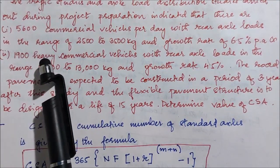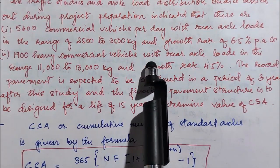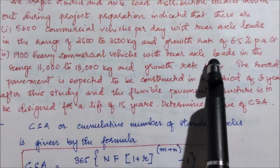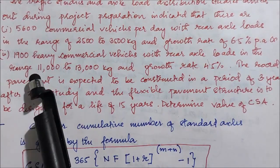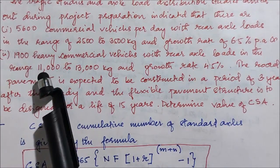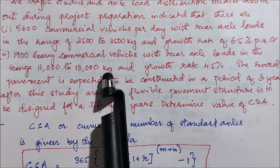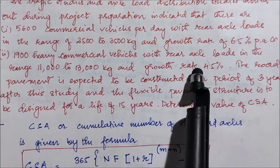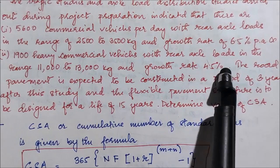For the second class, there are 1900 heavy commercial vehicles with rear axle loads in the range of 11,000 to 13,000 kg, and the growth rate will be around 4.5 percent per annum.